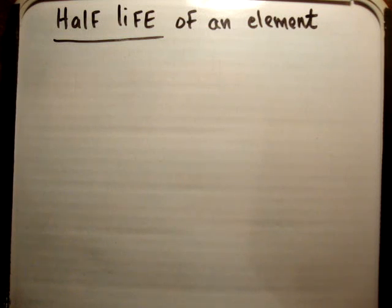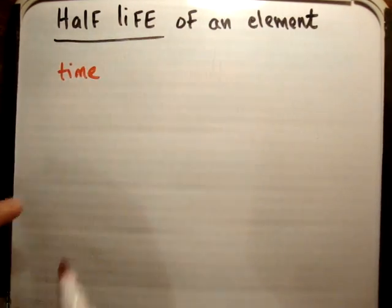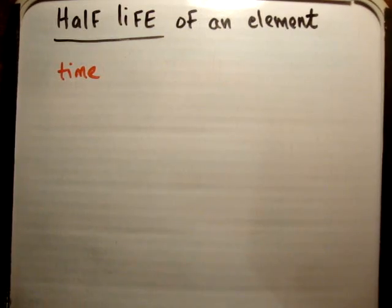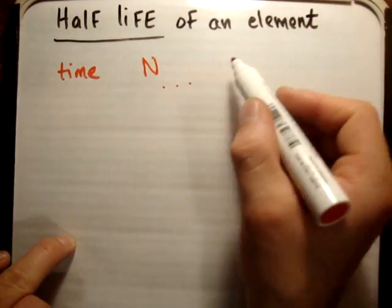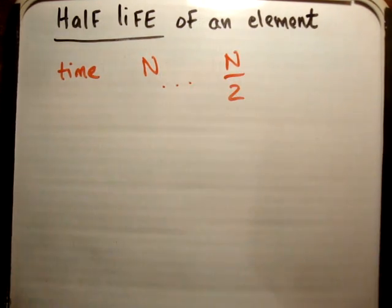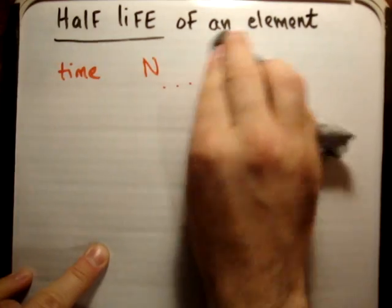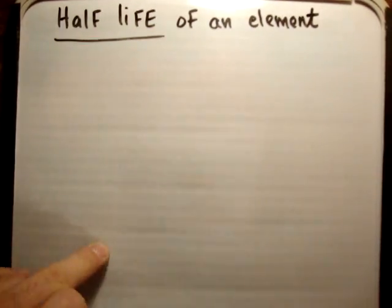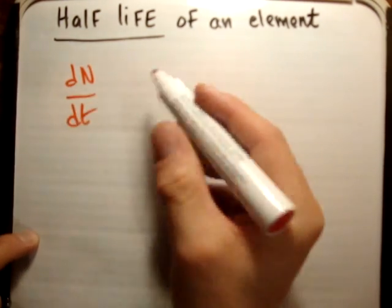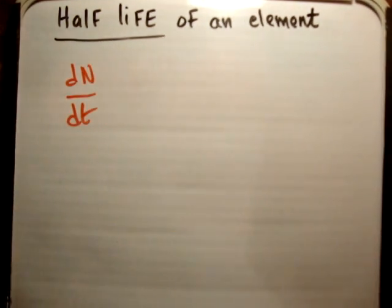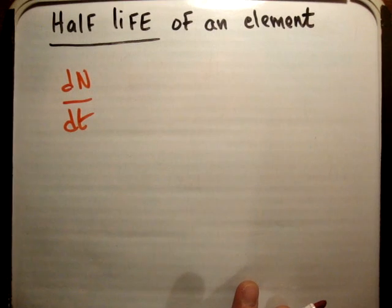So how do we find out what that is? We're talking about half-life, so we're talking about a time — the time it takes to go from having a certain number of atoms n, to having n over 2 atoms. There's a time associated with that, and we have a derivative: the rate of change of the number of atoms with respect to time.